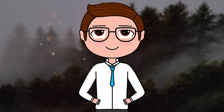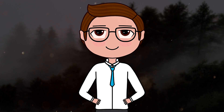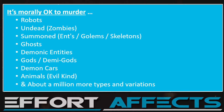The easiest way around this problem is to avoid human beings entirely, to avoid any moral uncertainty. This allows your MCs to kill countless amounts of any entity in any gruesome way you can think of. The most popular options: robots, undead, summoned ghosts, demonic entities, gods, demigods, demon cars, animals, etc. — essentially anything you can possibly think of. This method is especially popular in YA.